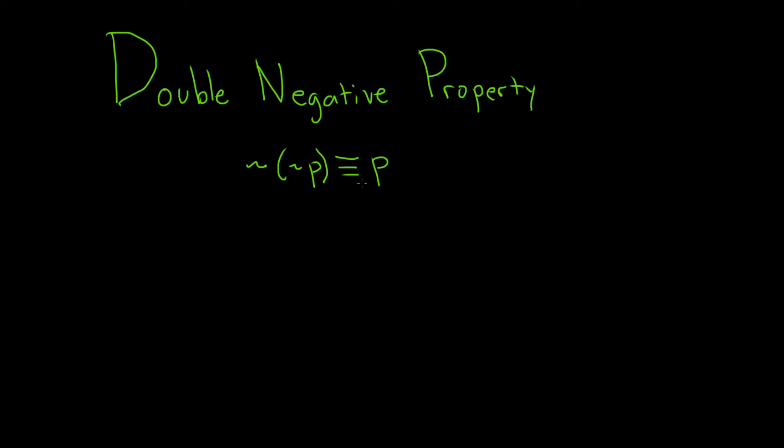So we have to check if these statements are logically equivalent. We have what's called the double negative property. The way to do that is you make a truth table for each side, and you just make sure that they have the exact same truth values in each row.